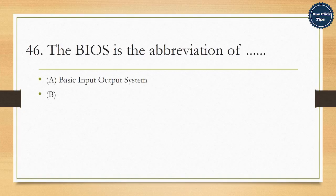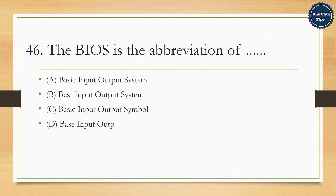46. The BIOS is the abbreviation of A. Basic input output system, B. Best input output system, C. Basic input output symbol, D. Base input output system. The correct answer is A. Basic input output system.